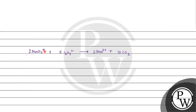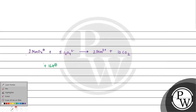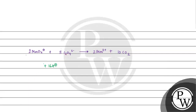Now we balance the charges. On the left: 2 MnO4⁻ gives −2 and 5 C2O4²⁻ gives −10, totaling −12. On the right: 2 Mn²⁺ gives +4. Since this is an acidic medium reaction, we add 16 H⁺ to the left side. 16 positive plus 12 negative gives a net charge of +4, which matches.